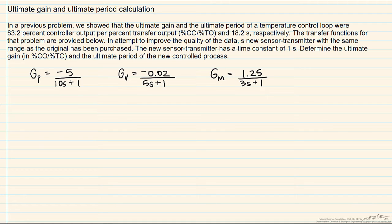We have a new sensor transmitter with the same range but with a time constant now of one second. If we look at our transfer functions, this change to the transmitter has no effect on the process or the valve. The only difference is that our transmitter transfer function now has a time constant of one.